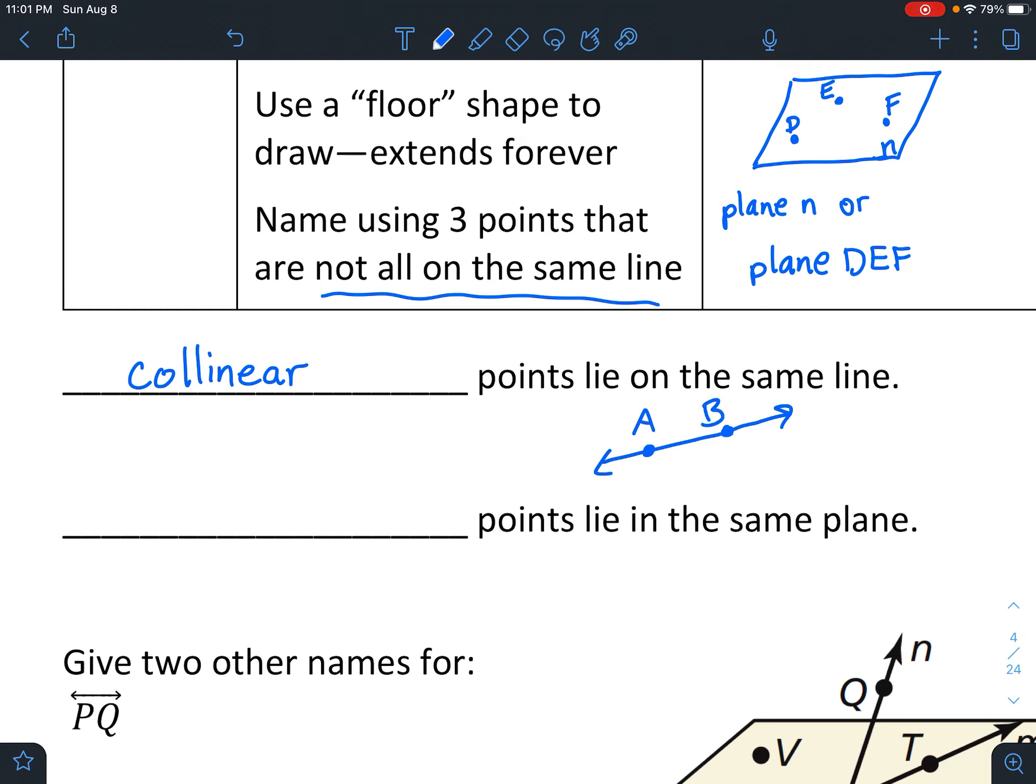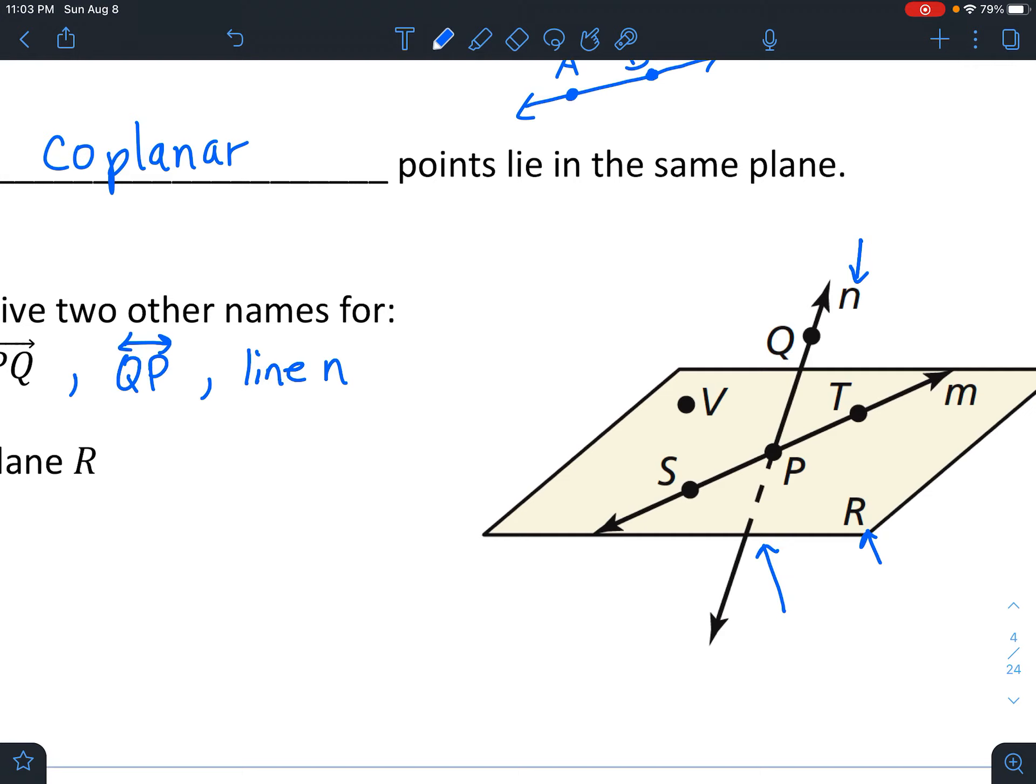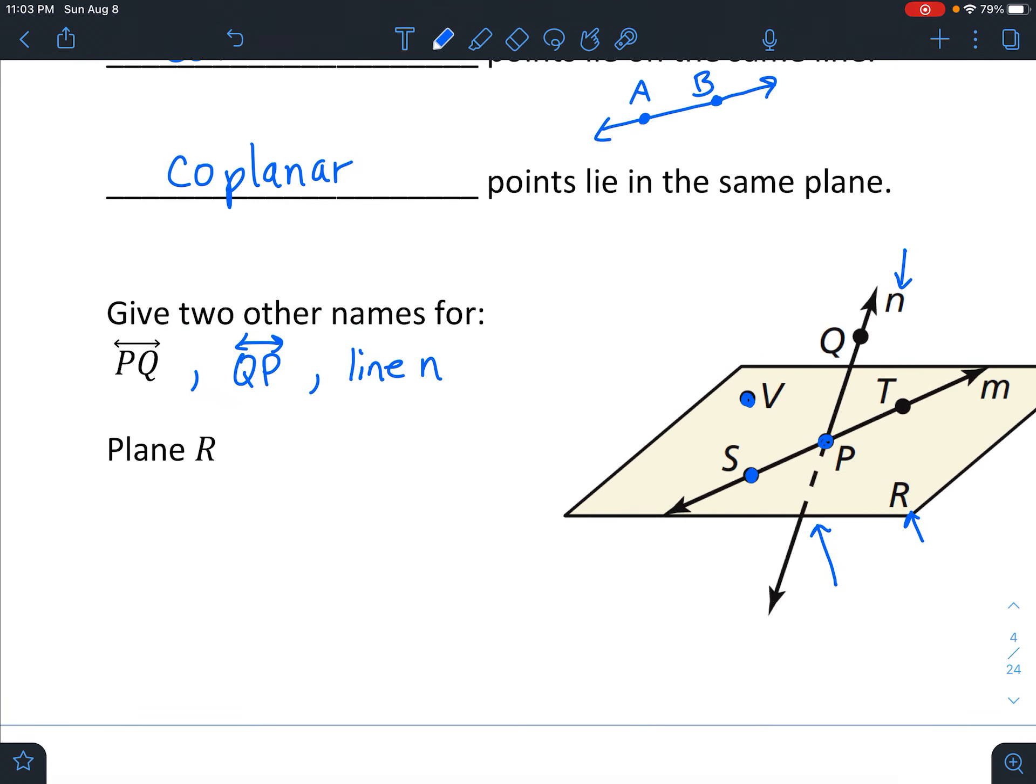Okay, so two other names for PQ. So we could just reverse the order and say QP. And then the other thing we can name it is N because you can see that it's labeled with an N. Okay, and then plane R, two other names for plane R. So plane R is already labeled with the R, right, so we can't take that. However, we can use three points that are not in a line. So we could use these three points because they're all on the plane. We could say plane, it doesn't matter what order, I'll just say V, S, P.